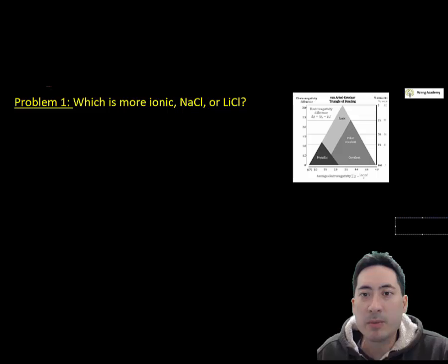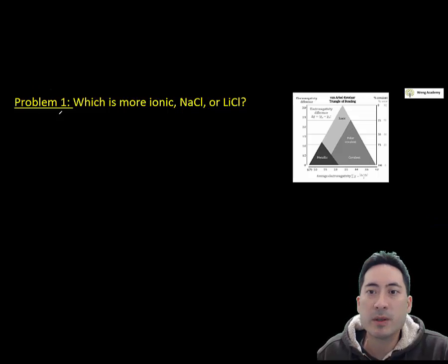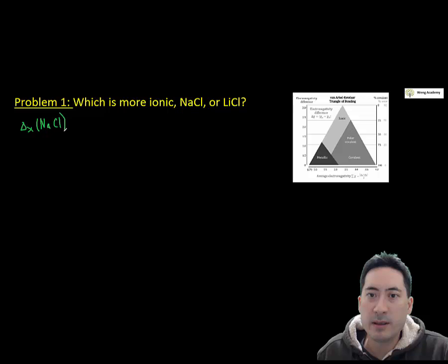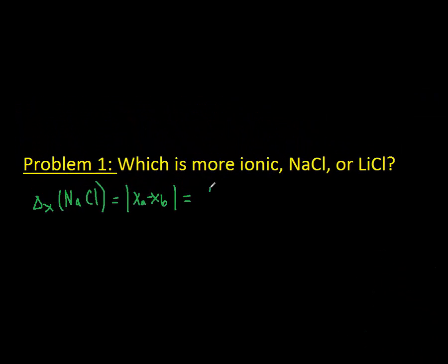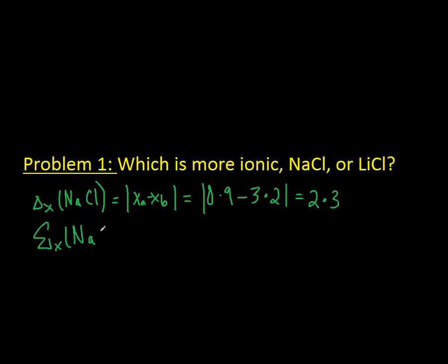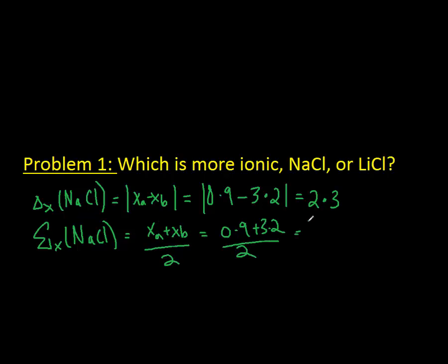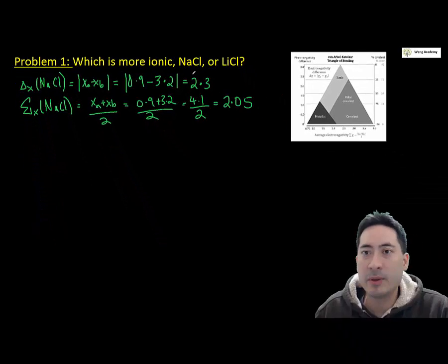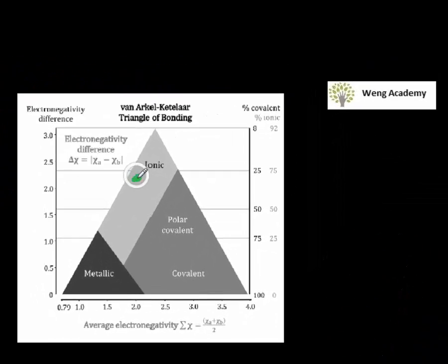Here we have a problem: which is more ionic, sodium chloride or lithium chloride? What we do is work out the electronegativity difference. We look up the data booklet for the electronegativity values, and then we also look up the average electronegativity for sodium chloride — we get 2.3 and 2.05. We can then plot that on the Van Arkel Kettler Triangle of Bonding.